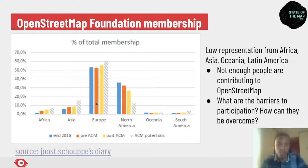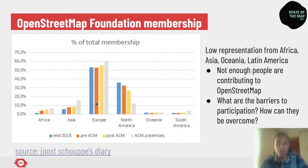Statistics show membership increased in different parts of the world, but representation remains very low in Africa, Asia, Oceania, and South America. There are not enough people contributing to OpenStreetMap from these regions, and we need to look into the reasons why. OpenStreetMap should be a map that anyone anywhere can engage with and contribute to, which is not currently the case.